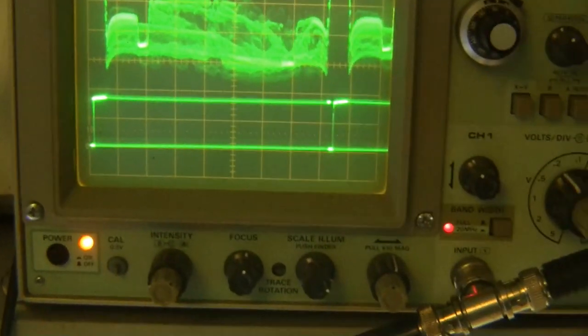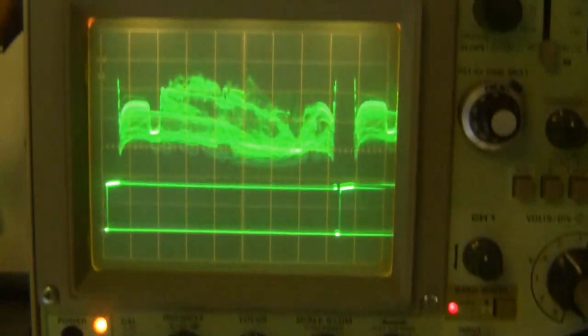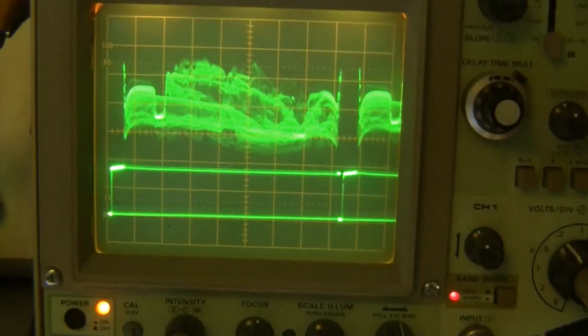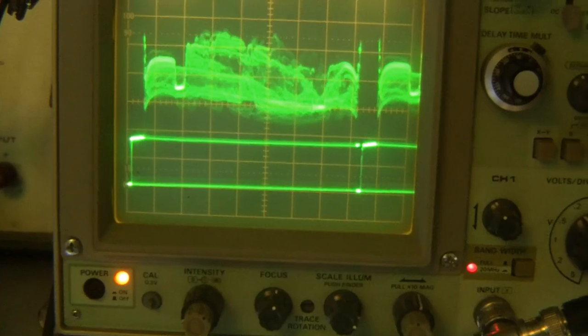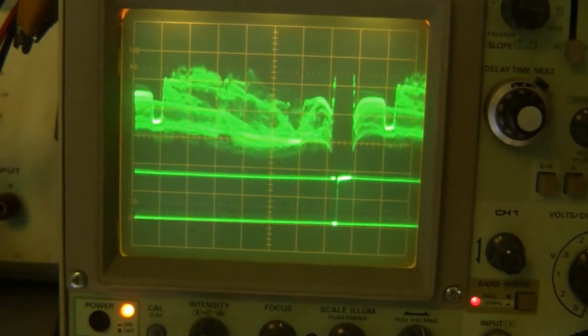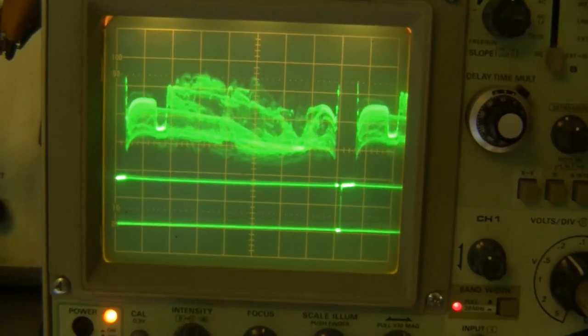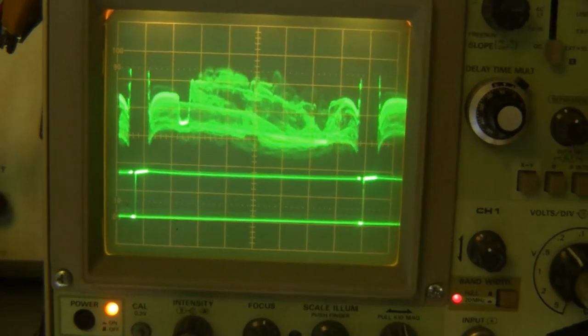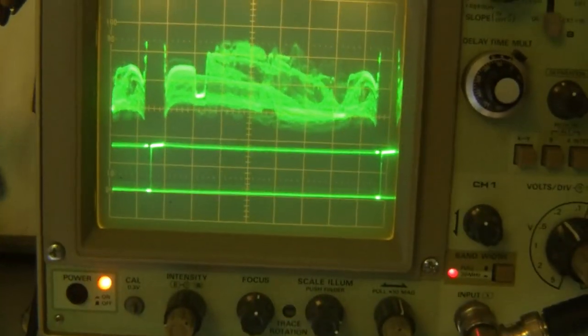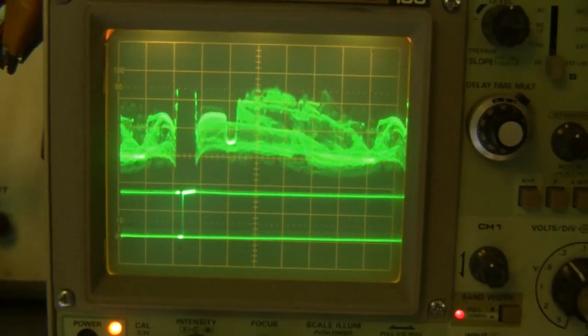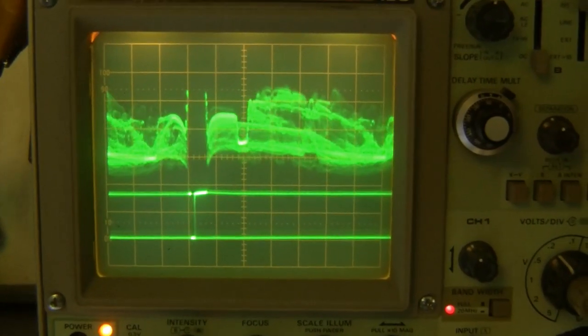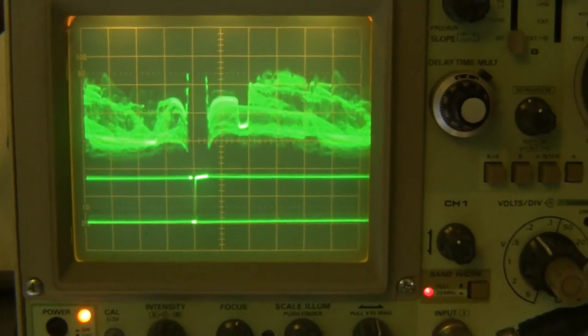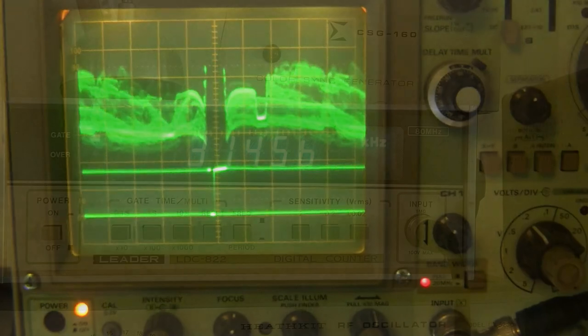The scope is triggered on the video vertical sync right now. Now let's switch the scope to trigger on the power line. You'll note that the video is now rolling and that's because the frequency of the crystal is not quite right. 31.500 kHz.